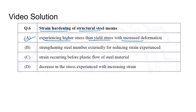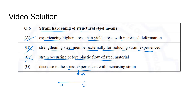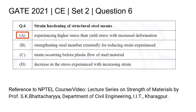Option B — strengthening steel member externally for reducing strain — is incorrect, because in strain hardening we are not strengthening the steel member externally. Option C — strain occurring before plastic flow — is also incorrect, because the plastic flow (yield plateau D to E) occurs before the strain hardening region. Option D — decrease in stress with increasing strain — is also incorrect, because in strain hardening the stress is increasing, not decreasing. Therefore the correct answer is Option A.